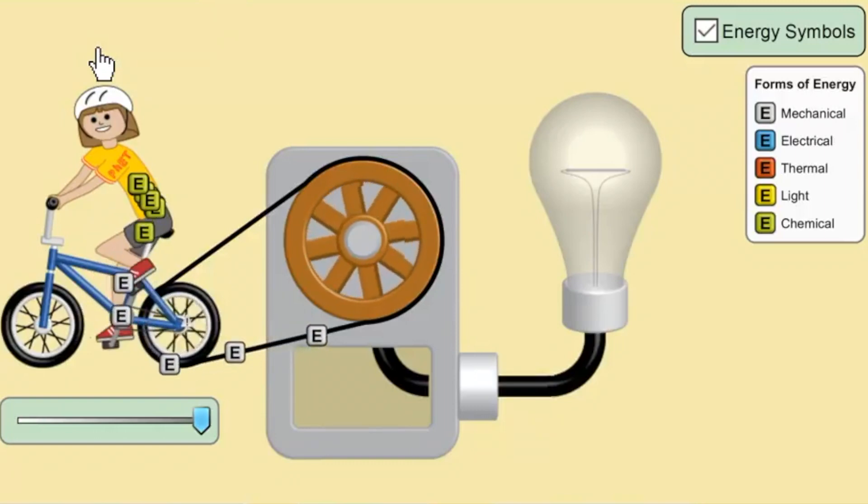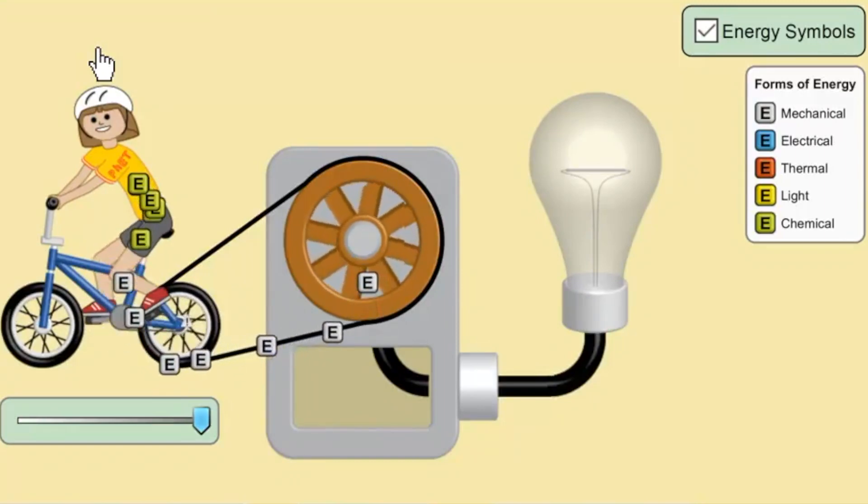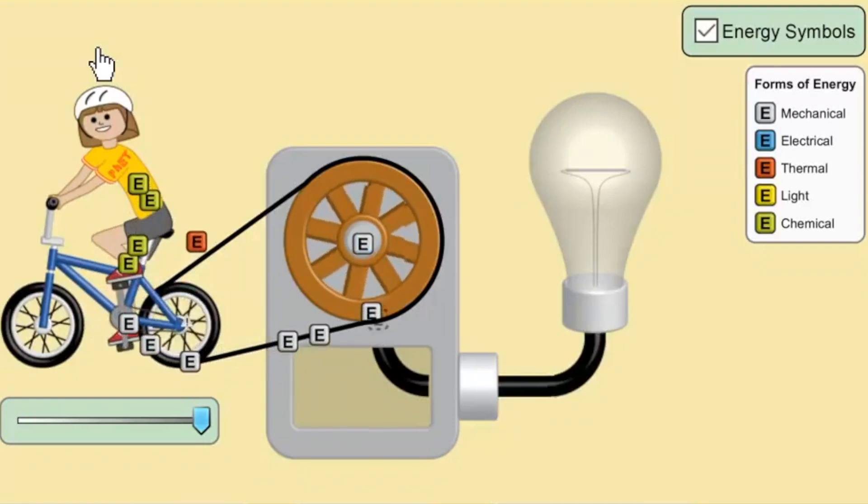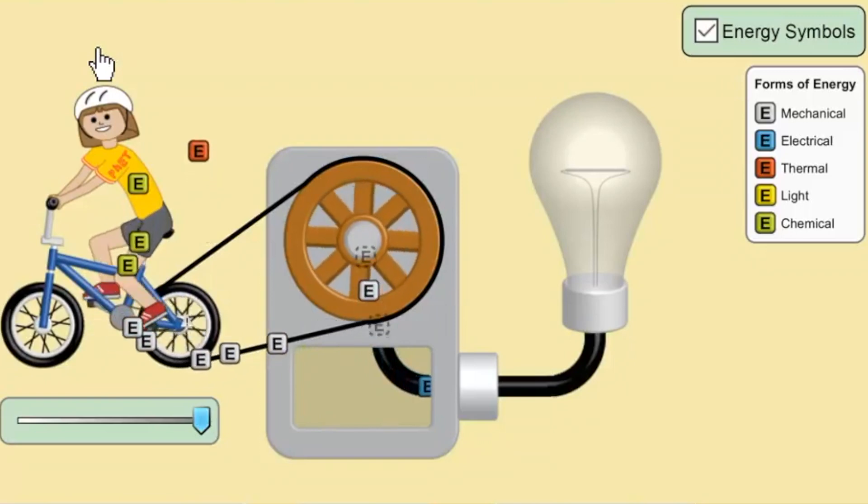But notice, coming off of the wheel and the pulley, we see a little bit of red E's coming off. That's because some energy is being converted into thermal energy in the form of friction.